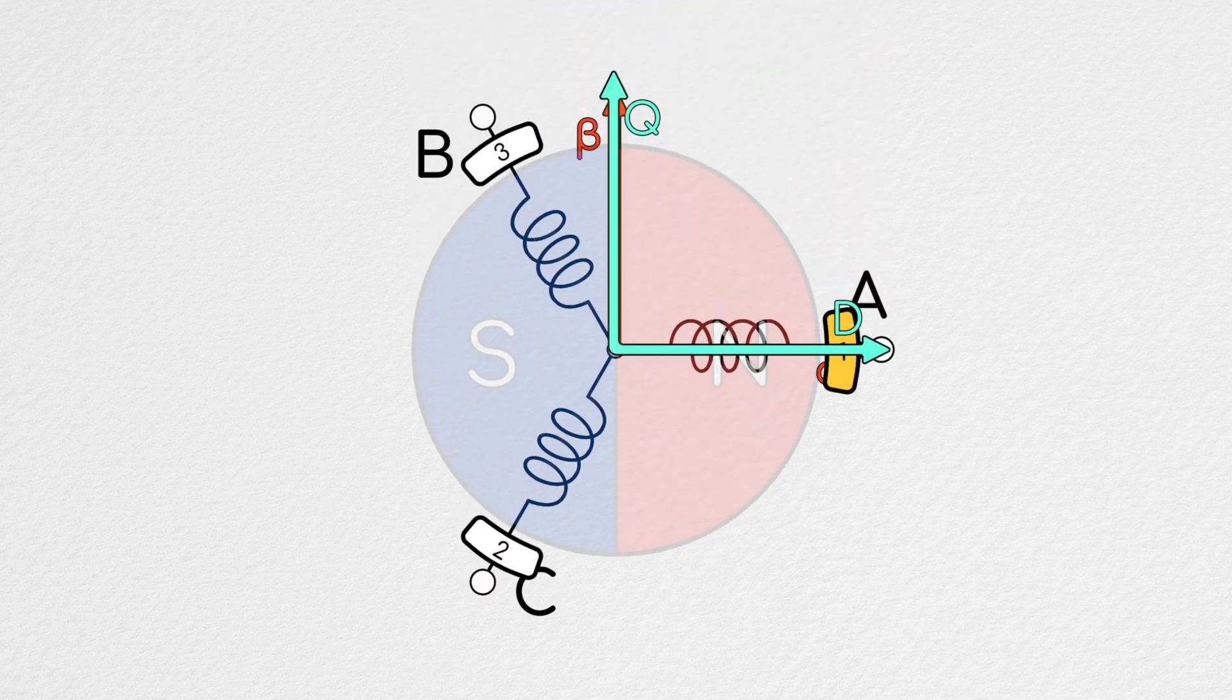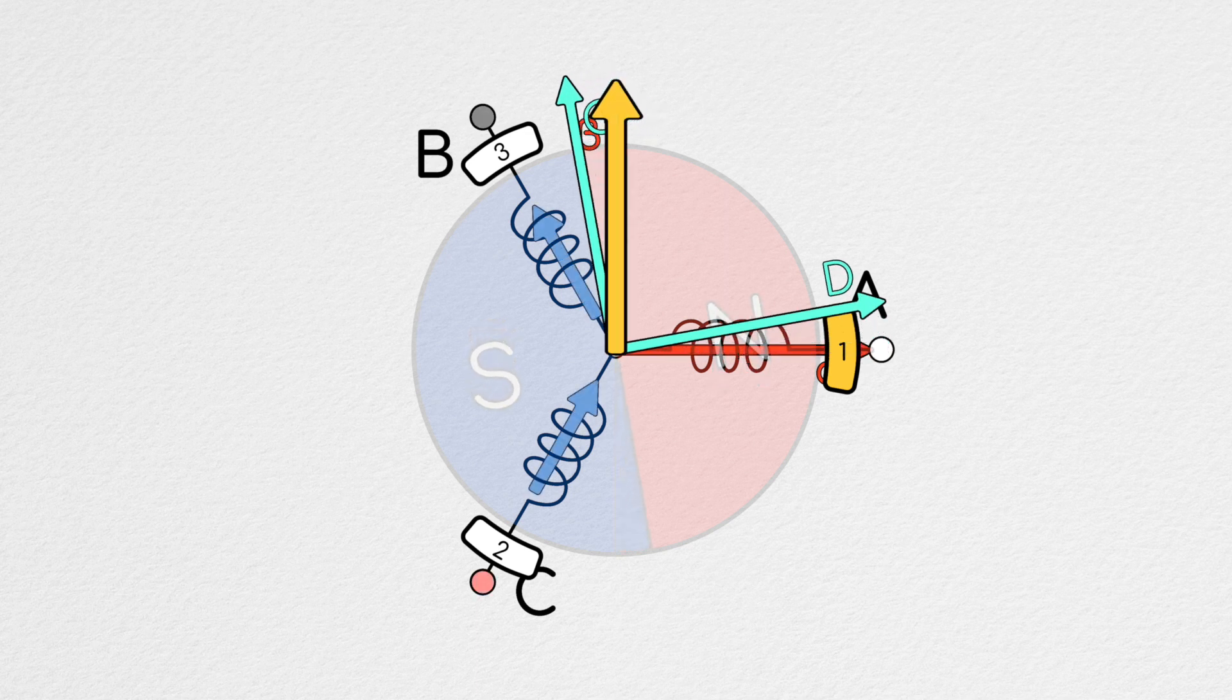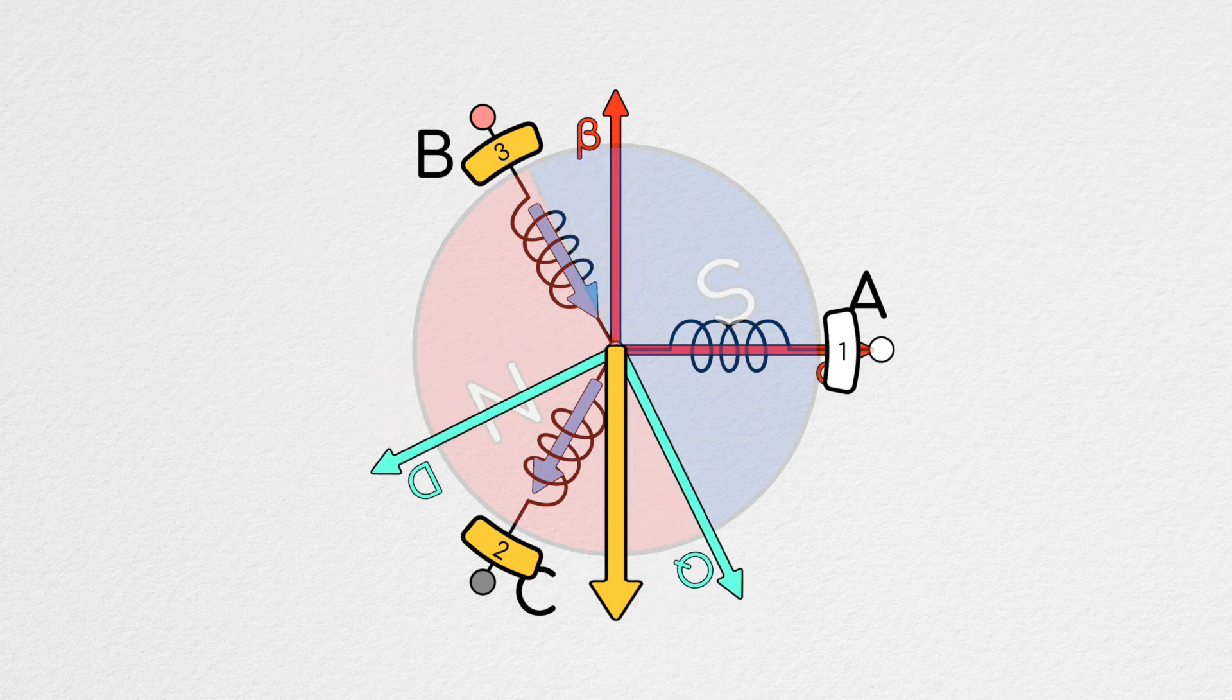Hi, and welcome back to Understanding Motors. Last episode, we introduced the idea of the Clark and Park transformations and closed with the question of how we would go about minimizing torque ripple in a motor's commutation.